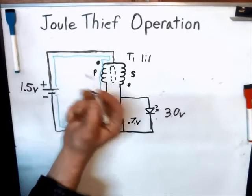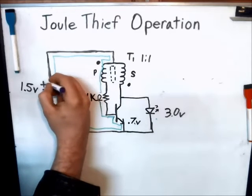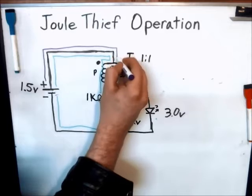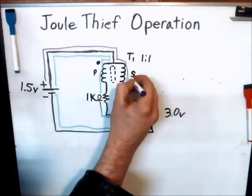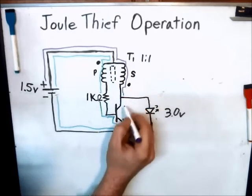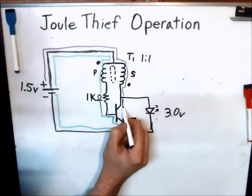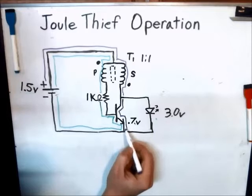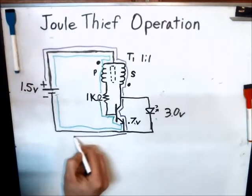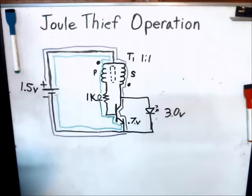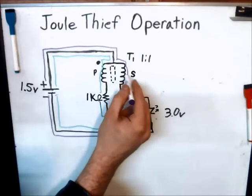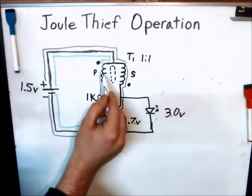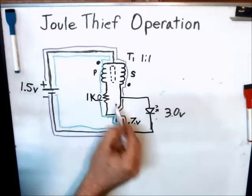Stage two, which I'll use purple for, would be coming up here and going through the secondary of the coil, through the collector-emitter junction, and then back to the negative. When this occurs, this current here going through the secondary would negate the initial base current. So that would actually turn off the transistor.